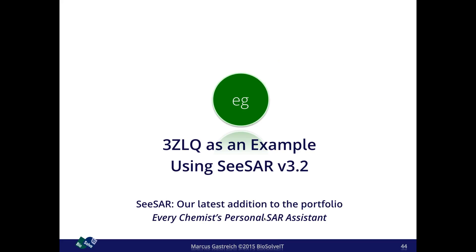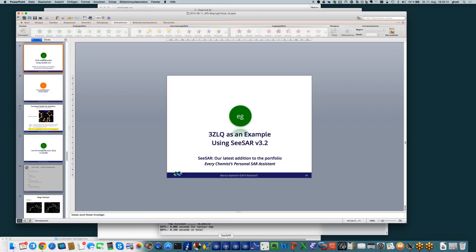Let's use 3ZLQ as an example using SEESAR 3.2, our latest addition to the portfolio. I keep saying it's every chemist's personal SAR assistant — not a dedicated modeling tool but something anyone can play with and use. We switched to agile development a while ago and this tool has been out for a bit more than a year — roughly every three to six weeks we have a release update, exactly like Google does with Chrome. Let me exit the presentation and fire up SEESAR.